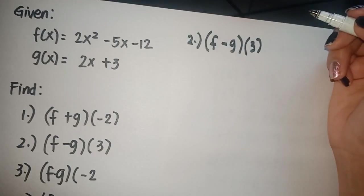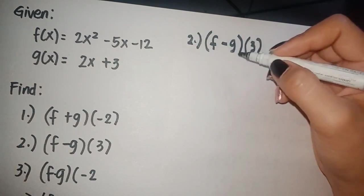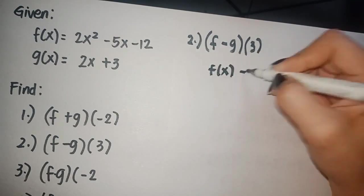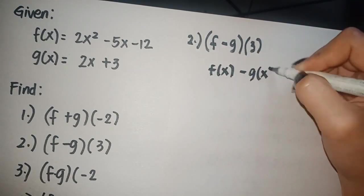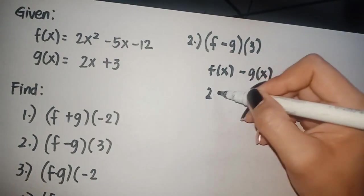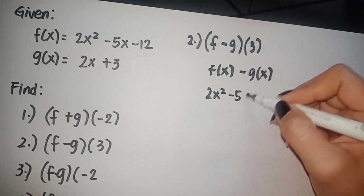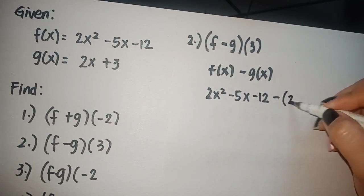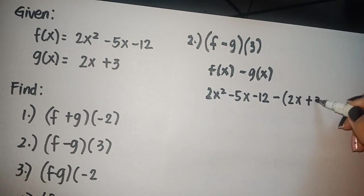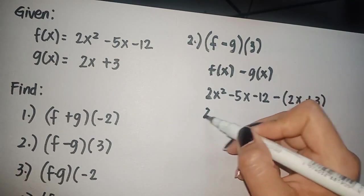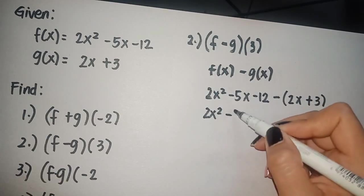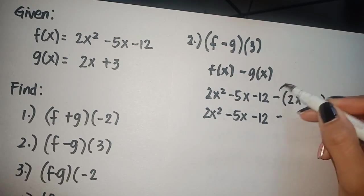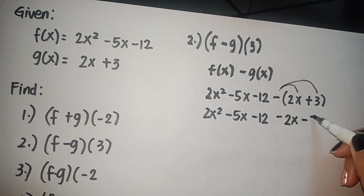Next, we have subtraction. If we are subtracting, the first thing that you should do is enclose the minuend or subtrahend with parenthesis, and then distribute the negative sign. So we have 2x squared minus 5x minus 12. Again, distribute. So we have negative 2x minus 3.